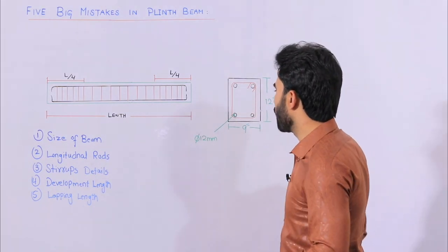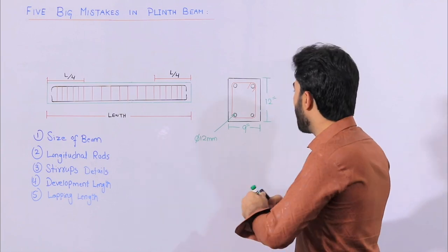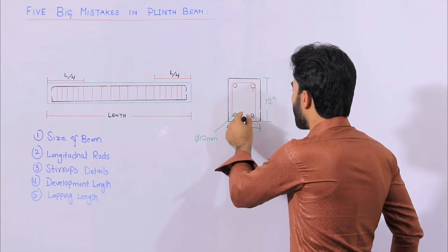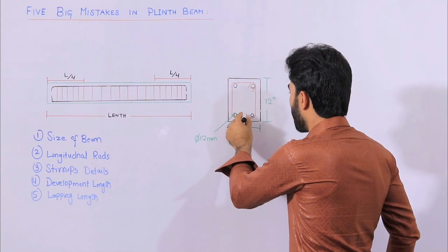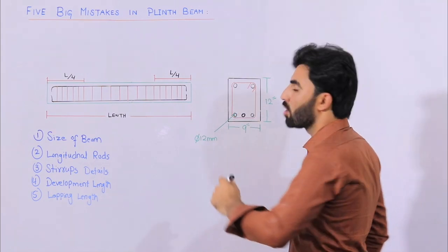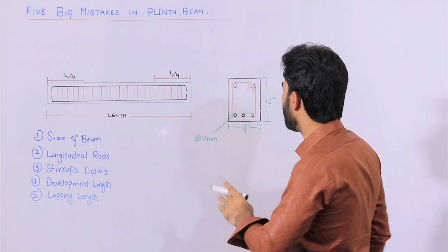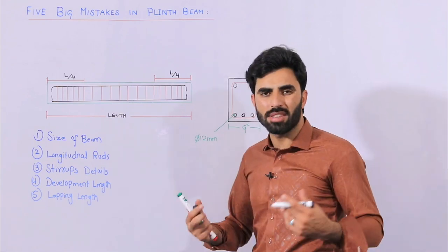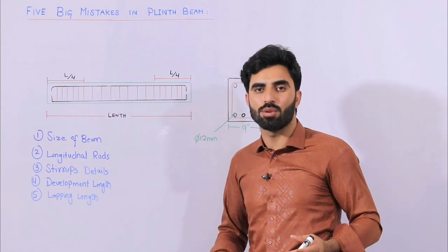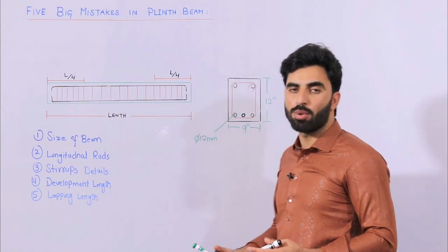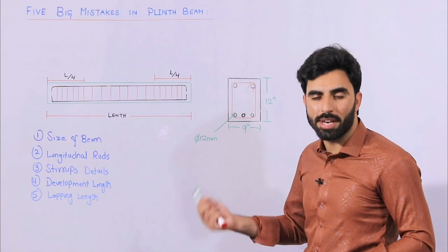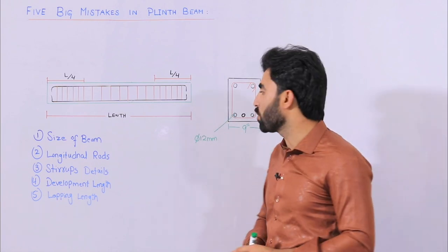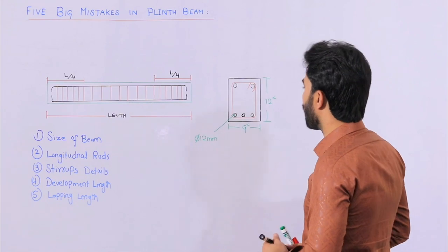If you are going for a double story, don't use less than five bars total — minimum three steel rods at the bottom and two at the top. This is for plinth beam. In the case of a crank bar, you can use two steel rods which should be cranked at the upper portion to resist negative bending moment. That concludes the second point for longitudinal bars.